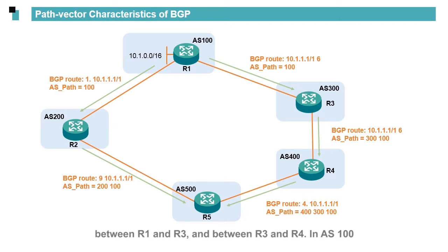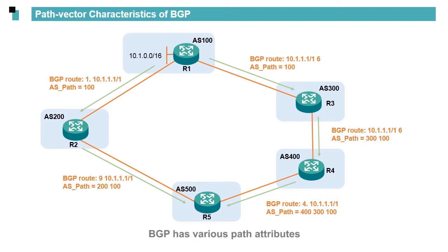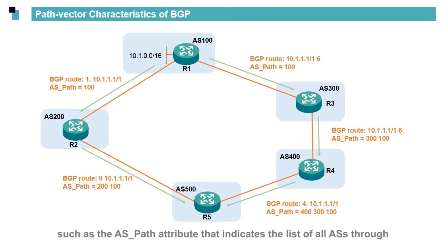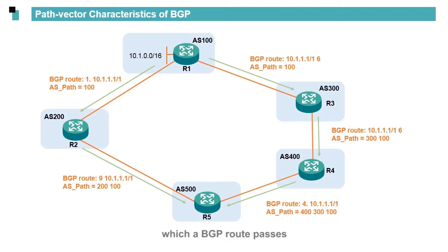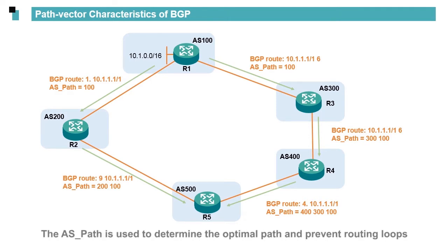And between R3 and R4. In AS100, there is a route 10.1.0.0/16. When sending the route to R2 and R3 through BGP peer relationships, R1 includes path attributes along with the route prefix. BGP has various path attributes, such as the AS path attribute, that indicates the list of all ASs through which a BGP route passes. For example, after R2 receives the route, it adds its AS number 200 to the AS path. The AS path is used to determine the optimal path and prevent routing loops.